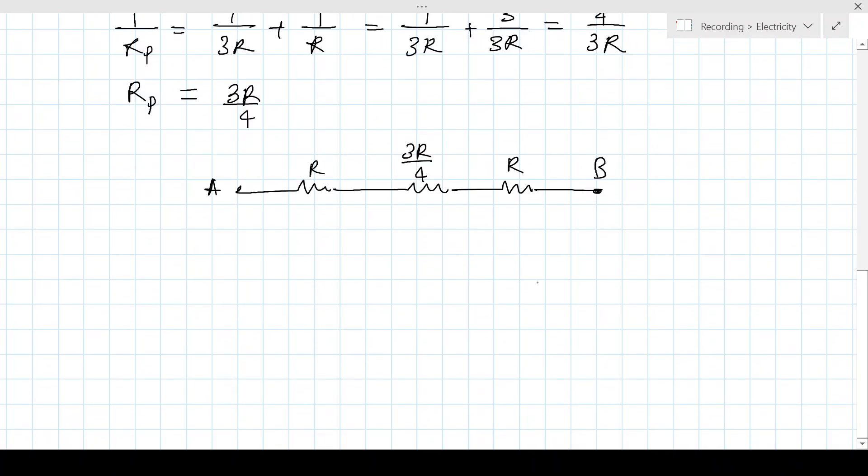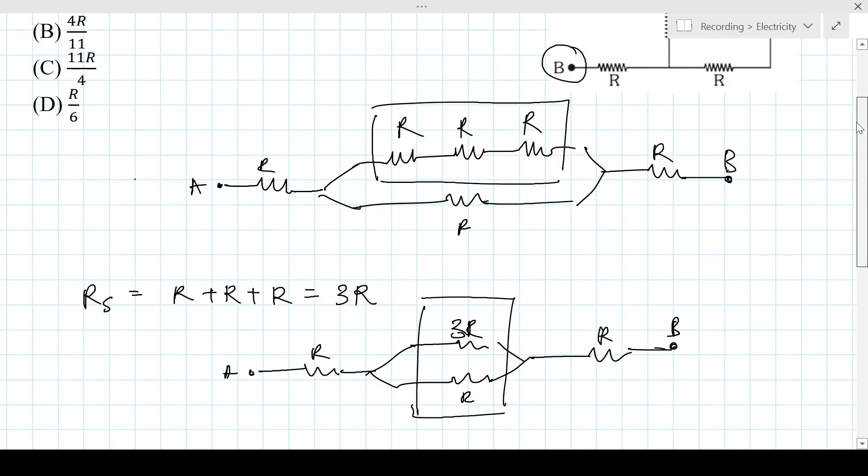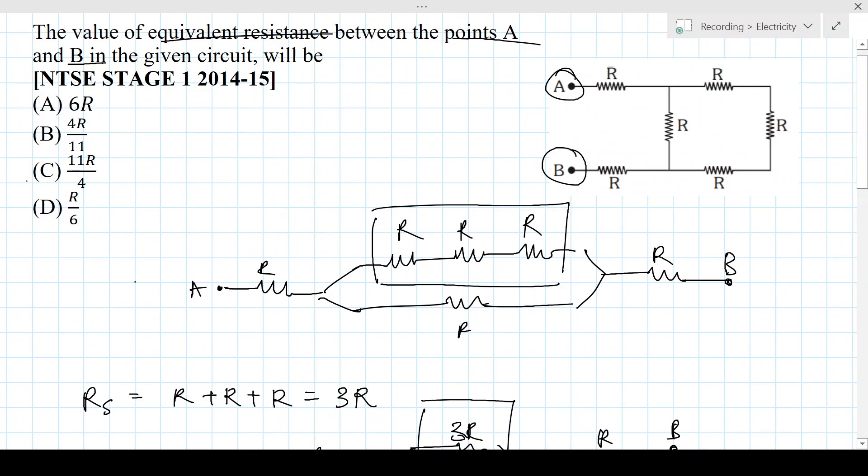So, now all of these are in series, so R equivalent is going to be equal to R plus 3R by 4 plus R, that is 11R by 4. And that's your answer, 11R by 4, option C.